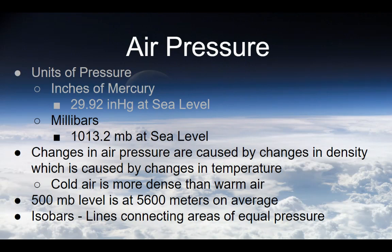Changes in pressure are caused by changes in density, which is caused by changes in temperature. Cold air is more dense than warm air, so cooler air will sink and warmer air will rise. The 500 millibar level is at 5,600 meters on average. We can look at the 500 millibar pressure level to determine whether we'll be close to average temperatures, cooler than average, or warmer than average. Isobars are lines on a map that connect areas of equal pressure.